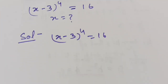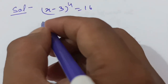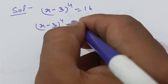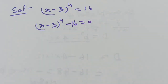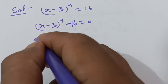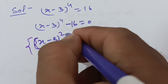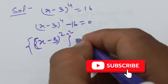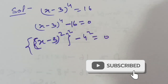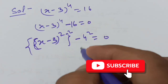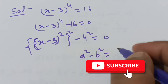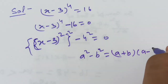We write the equation as (x minus 3) to the power 4 minus 16 equals 0. We can rewrite this as (x minus 3) squared, quantity squared, minus 4 squared equals 0. This is in the form a squared minus b squared, which equals (a plus b)(a minus b).